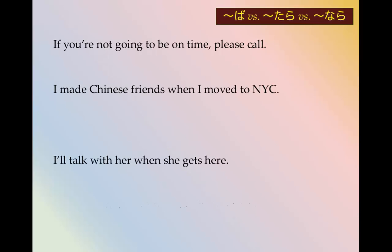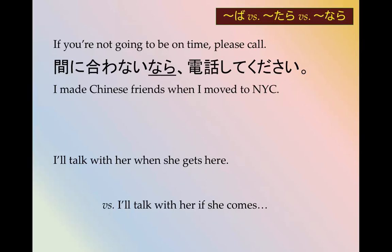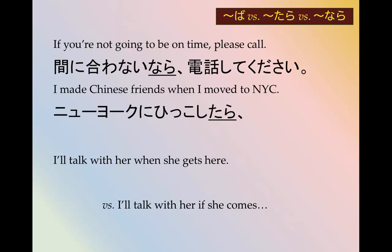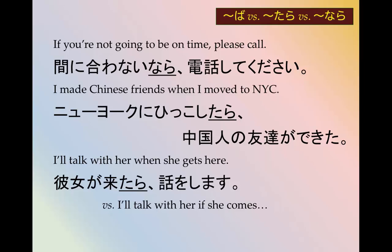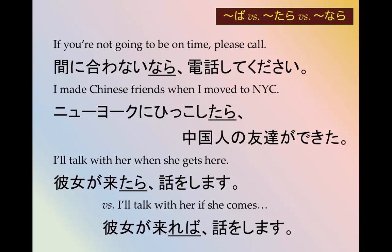Which conditional would you use in these cases? 'If you're not going to be on time, please call' — this is restrictive, so we'd use なら: 間に合わないなら電話してください. 'I made Chinese friends when I moved to New York City' — we have to use the たら form because it's a result that came after something happened: ニューヨークに引っ越したら、中国人の友達ができた. 'I'll talk with her when she gets here' — 彼女が来たら、話をします. Whereas if you use the ば form — 彼女が来れば — it means 'if she comes.'